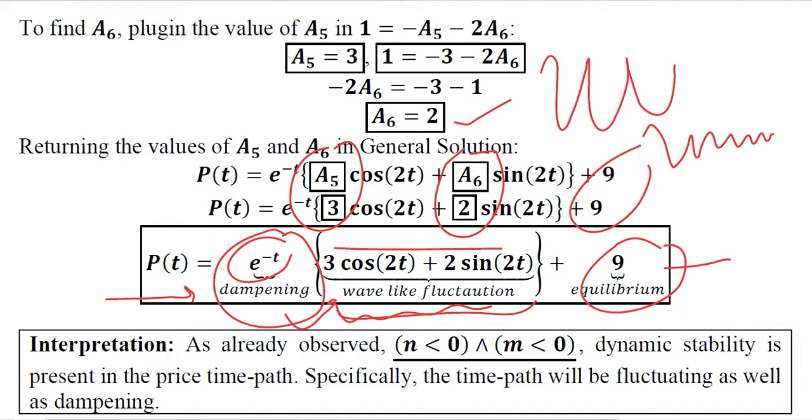So in this example, n was negative as well as m. So we had possibility of any one of those cases, out of which the complex root case appeared in this certain numerical economic application. And the stability is present because both of them are negative, and it happens the dynamic stability occurs.